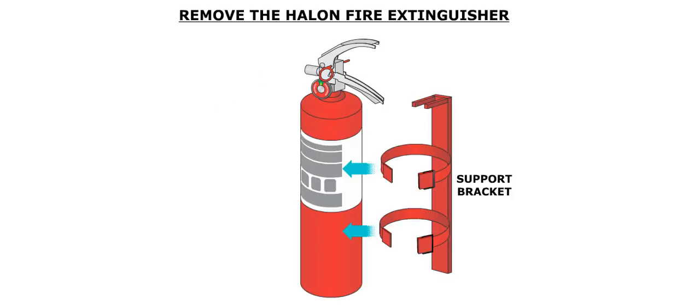The first step is to remove the extinguisher from its stowage bracket by releasing the latching mechanism. This opens the retaining collar and enables the extinguisher to be removed from the stowage bracket.